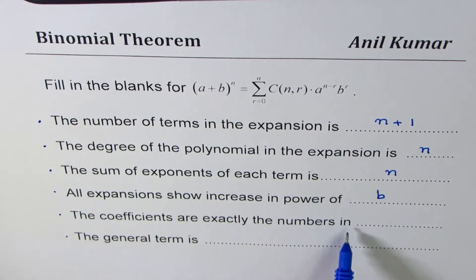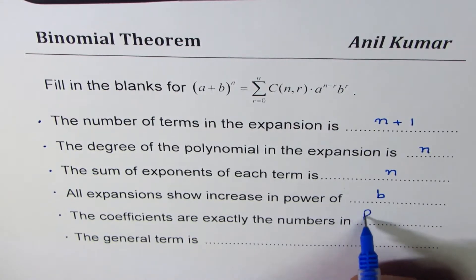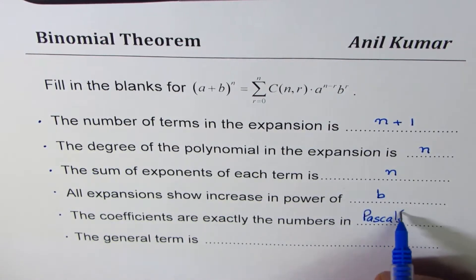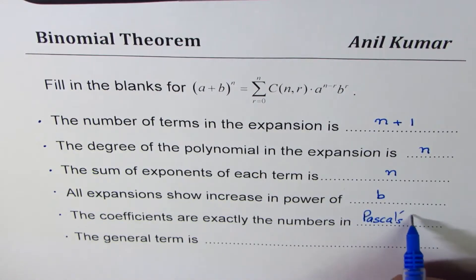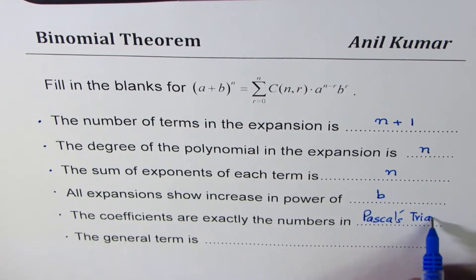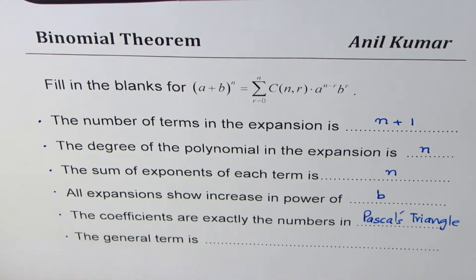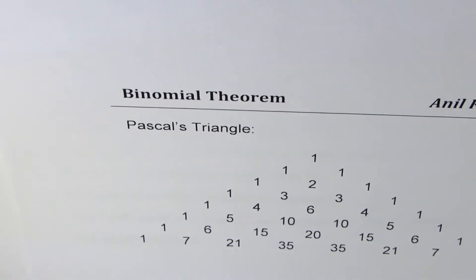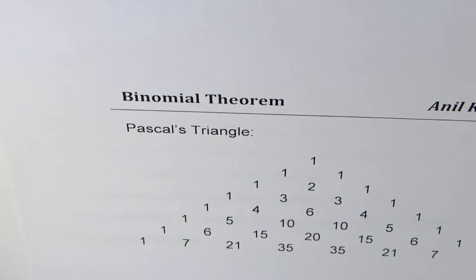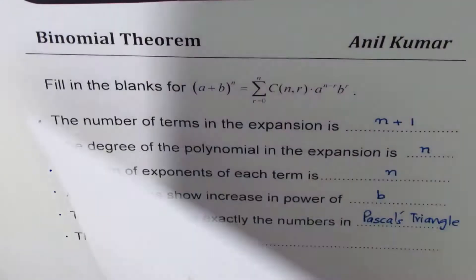The coefficients are found in Pascal's triangle — this one right here. These are all the binomial coefficients.